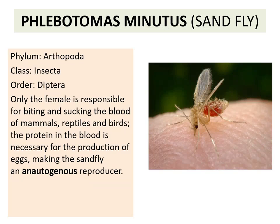Coming to the second insect, it is Phlebotomus minutus, that is the sandfly. Regarding classification: phylum Arthropoda, class Insecta, and order Diptera — so both these insects are from the order Diptera. Only the female is responsible for biting and sucking the blood of mammals, reptiles, and birds. The protein in the blood is necessary for the production of eggs, making the sandfly an autogenous reproducer.